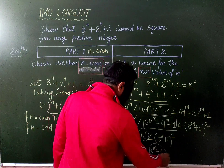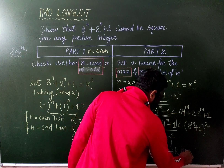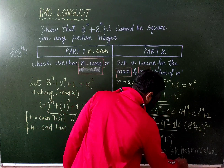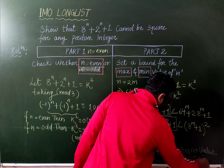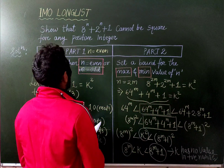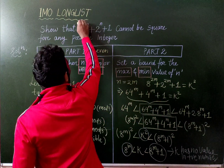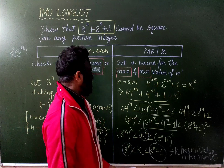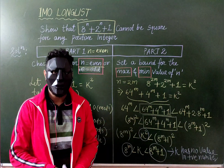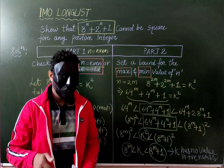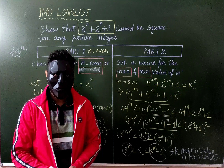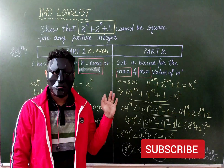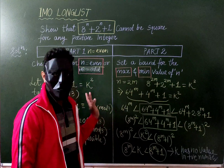We conclude that k has no value in the positive integers. Therefore, the expression 8^n + 2^(n+1) cannot be a perfect square for any positive integer n. Hope you liked this video! If you have any suggestions or an alternative method, comment below. We'll see you next time with a new video — till then, bye bye, take care. Like, share, and subscribe to my channel for more interesting questions and discussions.